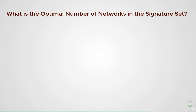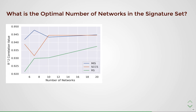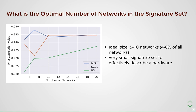We answer the second question of finding the optimal number of networks in the signature set by training different cost models with an increasing number of networks for all three proposed methods. For the mutual information and Spearman correlation coefficient methods, the ideal size is 5 to 10 networks — just 4 to 8% of the total networks in the set. For random sampling, there is a general trend of increasing accuracy with more networks, but with caution about outliers that could give rise to poor models. These results substantiate the overall benefits of our proposed generalizable cost model.